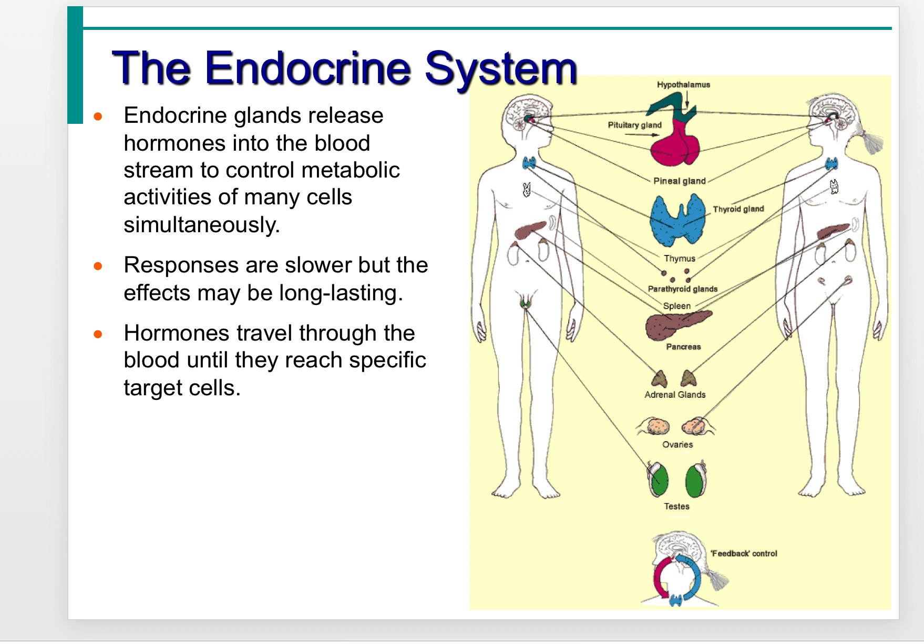The endocrine system, on the other hand, is a bit different. It involves glands that produce chemicals called hormones that release into the bloodstream. These hormones control metabolic activities of cells throughout the body. The responses of the endocrine system are slower, but they may have a long-lasting effect. Hormones travel through the blood until they reach a specific target cell.